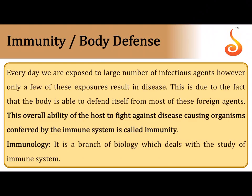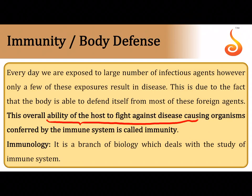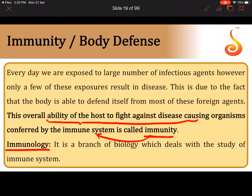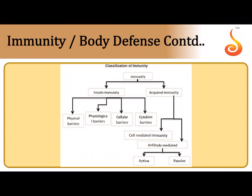Our body is equipped to fight disease-causing pathogens through immunity — the ability to fight against pathogens. This immunity is conferred by the immune system, which consists of various cells, tissues, and organs working together in a synchronized manner to trap, combat, and destroy pathogens by producing bioactive substances. The branch of biology that deals with the study of the immune system is called immunology. Immunity is classified into innate immunity and acquired immunity.